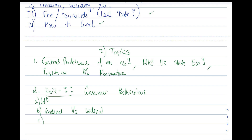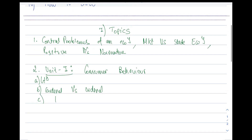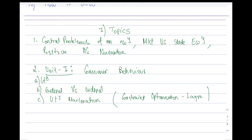After that we will understand the process of utility maximization. Here we will expect you to already be familiar with constrained optimization, which is a mathematics topic. Using the Lagrangian, you should be able to do constrained optimization. If you have forgotten it, please revise it from Sydsaeter.